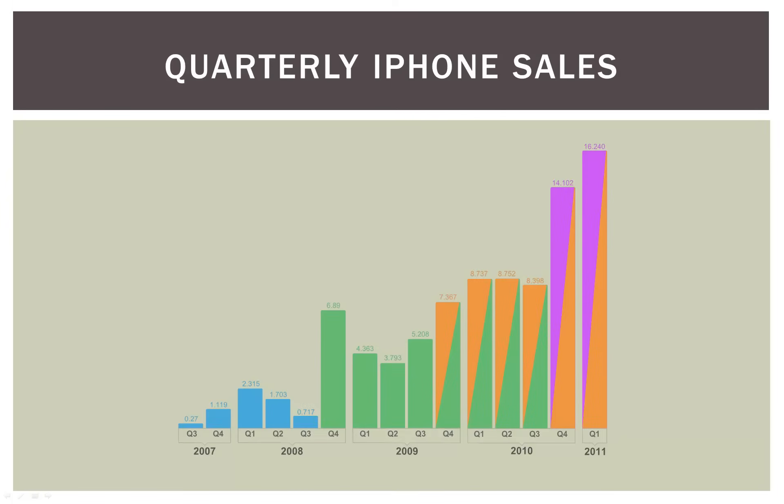Here's a graph of quarterly iPhone sales up through the first quarter of 2011. You can definitely see that iPhone sales have increased substantially over the course of the end of 2007 through the beginning of 2011. And many companies, almost all large legitimate companies, will be doing sales forecasts for their products and things like that. So that's definitely a good example of a time series forecast.